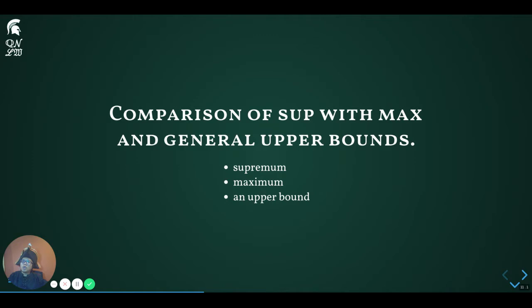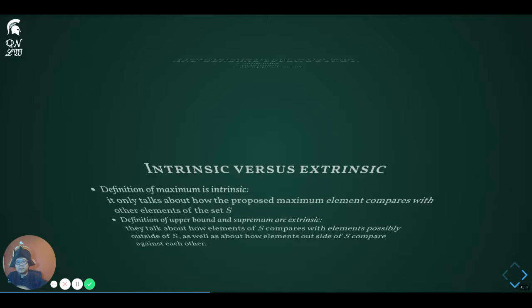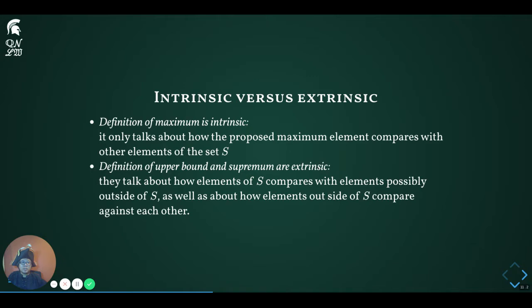To start with, we will talk about how the supremum, the maximum, and more general upper bounds are all related to each other. The first concepts I'd like you to recall from our discussion last week are those of intrinsic versus extrinsic statements. The definition of maximum is intrinsic — namely, that an element of a set S is the maximum if it is bigger than all other elements of S — is a statement that only concerns the elements of S.